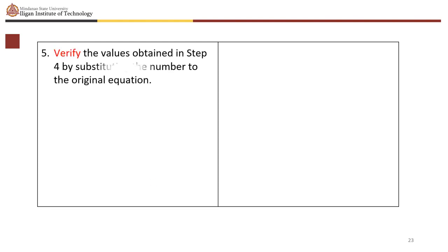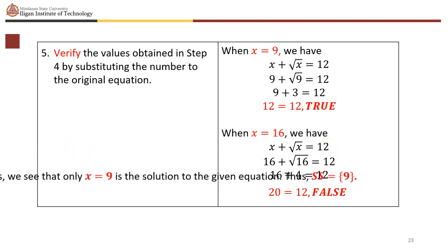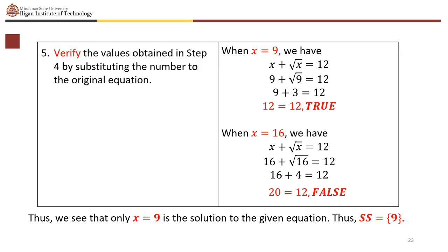For x equals 9: 9 plus square root of 9 equals 9 plus 3 equals 12. True. For x equals 16: 16 plus square root of 16 equals 16 plus 4 equals 20, which does not equal 12. False. Therefore x equals 16 is an extraneous root and the solution set is {9}.